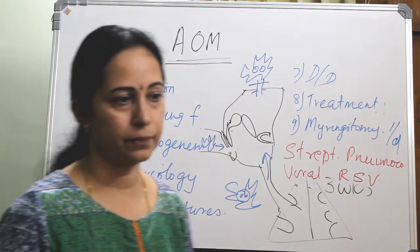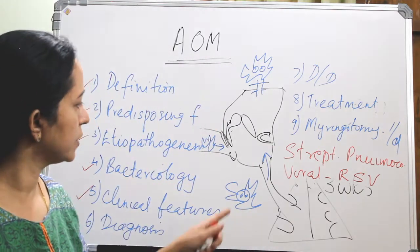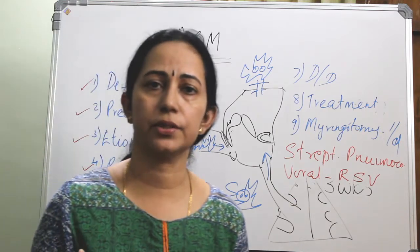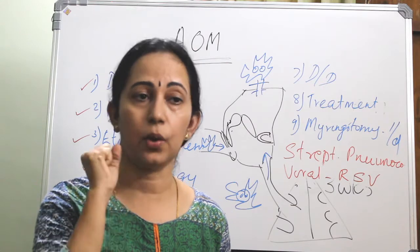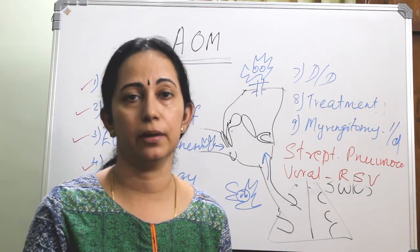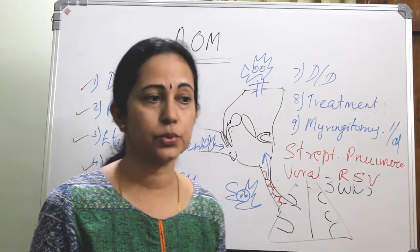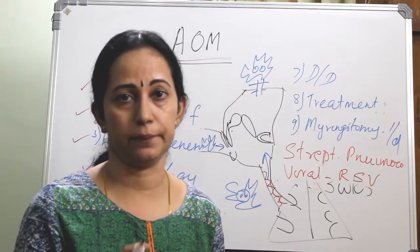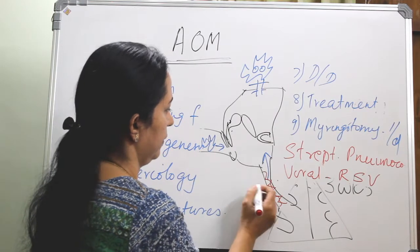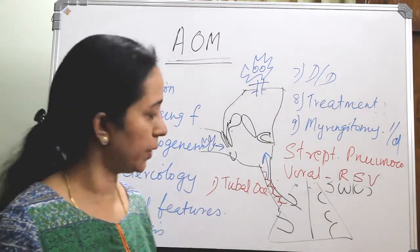What about the clinical features? We can divide the natural course into five stages. The first stage is tubal occlusion: when there is infection of the eustachian tube, there will be edema, and this edema causes a block. That is the stage of tubal occlusion — the eustachian tube gets occluded.